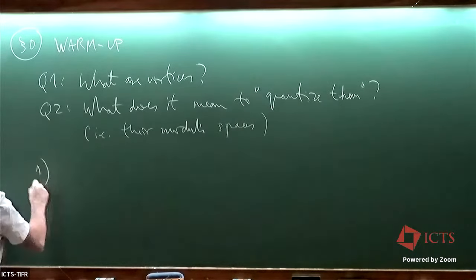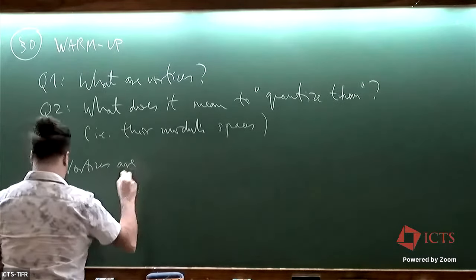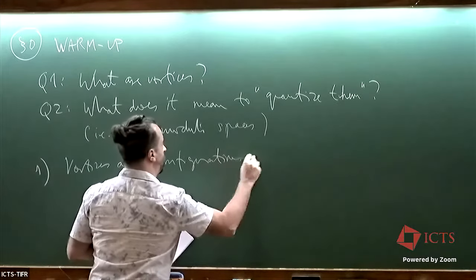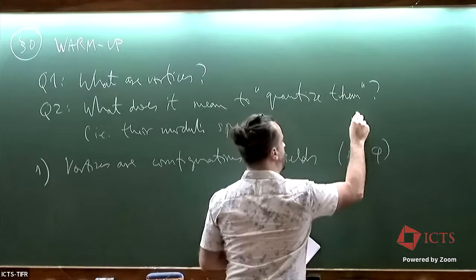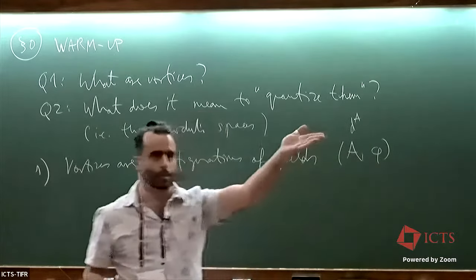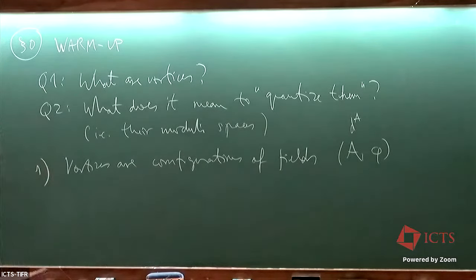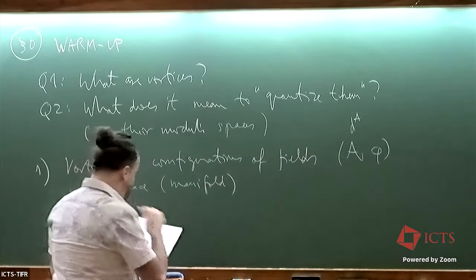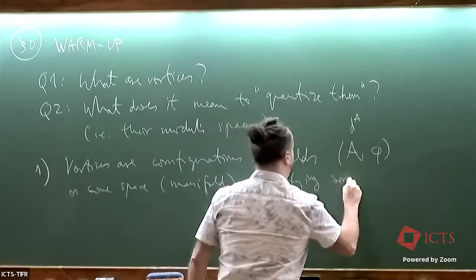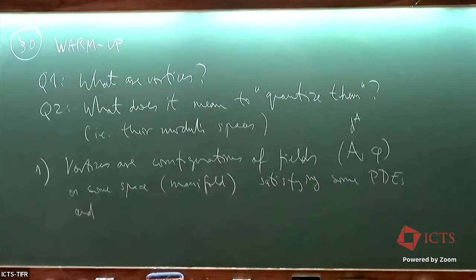Let me get started with question one, very basic and slow. Vortices are configurations of fields. For me, fields are usually pairs (A, φ), where φ is a matter field — which appeared in Martin's lecture — and A is a connection, so we have a gauge symmetry. This is going to be different from Martin's story. These pairs live on some manifold and satisfy some PDEs, and are identified under gauge symmetry.